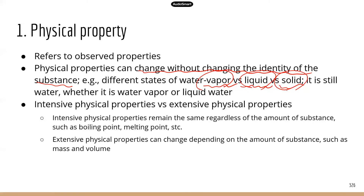Now there are two groups of physical properties: intensive physical properties and extensive physical properties. Intensive physical properties remain the same regardless of the amount of substance. Basically, it doesn't matter how much substance you have — these physical properties will be the same. Examples are boiling point and melting point. So it doesn't matter how much water you have, whether you have one gram or a thousand grams of water, the boiling point for water is still the same. It does not change.